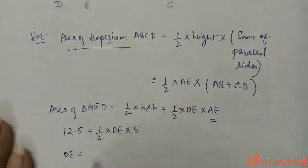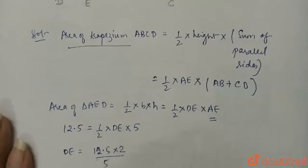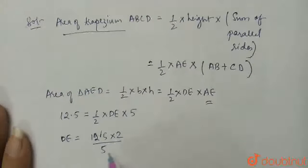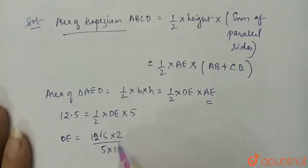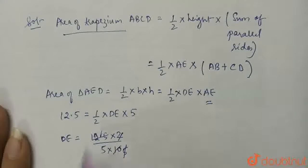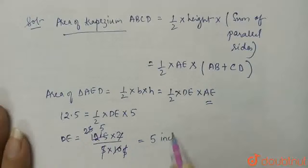DE equals 12.5 times 2 divided by 5. Calculating this: 12.5 times 2 is 25, and 25 divided by 5 equals 5. So DE is 5 inches.